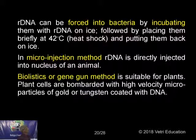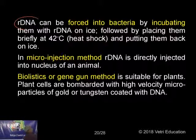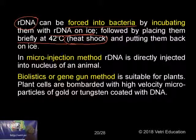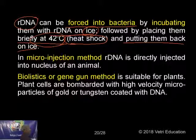rDNA can be forced into bacteria by incubating them with rDNA on ice, then placing them briefly under heat shock, then putting them back on ice. This is called the heat shock method — ice, then heat, then ice again — by which the rDNA is forcefully sent into the bacterium.